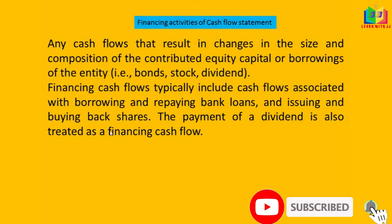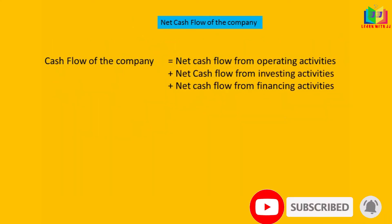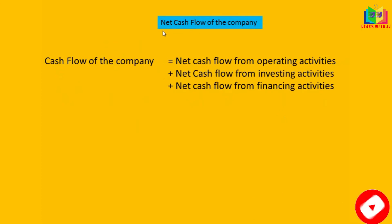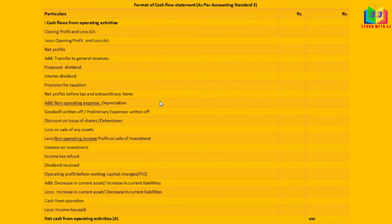Now we'll see the net cash flow of the company. The net cash flow is nothing but the net cash flow from operating activity, plus net cash from investing activity, plus net cash from financing activity. The sum of all three activities gives the net cash flow of the company.